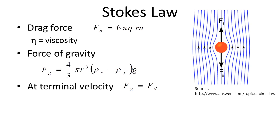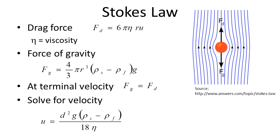At terminal velocity, F subscript g and F subscript d must be equal to each other because there's no acceleration. So we can plug those expressions for F_d and F_g into this relationship and solve for the velocity. When we do that, we find an expression where the radius has been replaced with the particle diameter d.